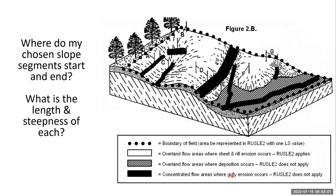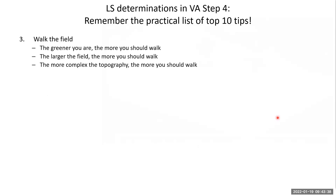Defining the begin and end points is both science and art. The crucial thing is judgment — if you characterize the field as having a less extreme slope than it actually has, some slopes will be under-protected. That's a big part of applying judgment as a planner and not a robot to the LS selection process.